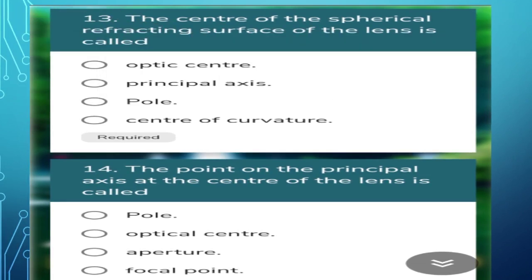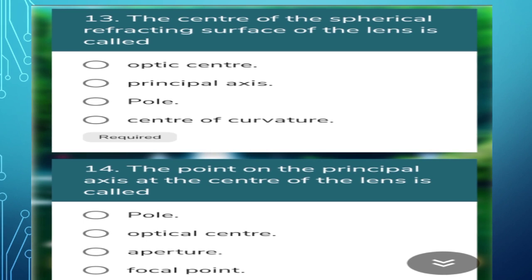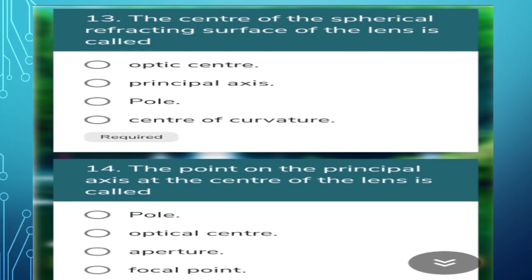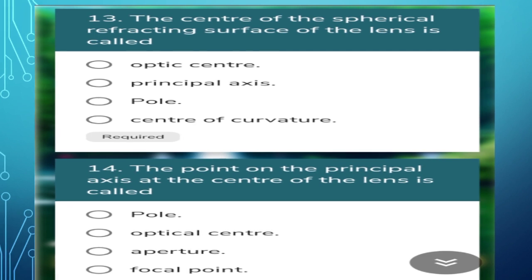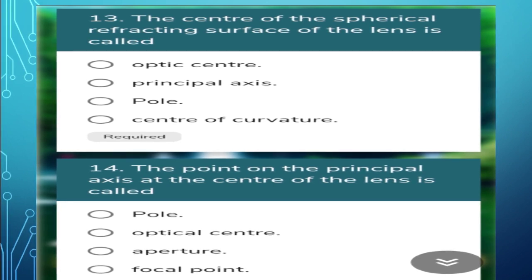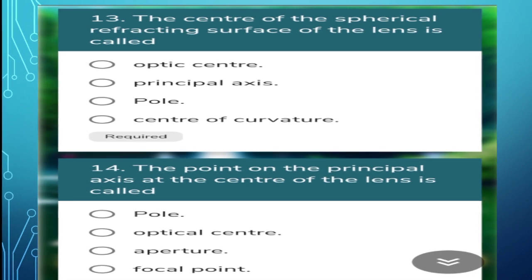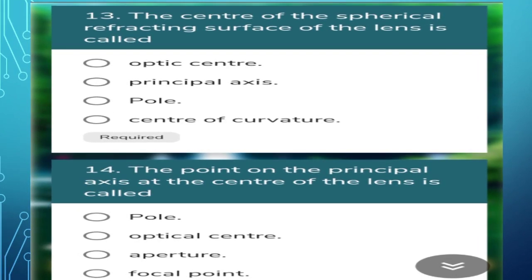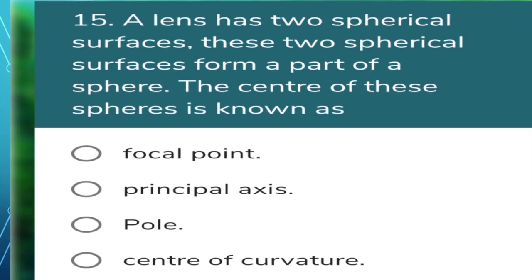Next question: the center of the spherical refracting surface of a lens is called? The center point of the spherical surface of a lens is called the pole — the third option is correct. Next question: the point on the principal axis at the center of the lens is called? That is called the optical center.